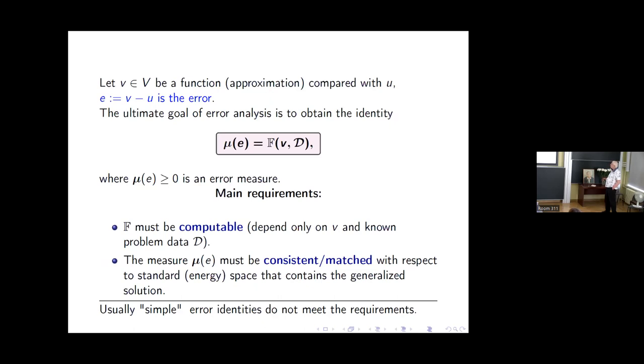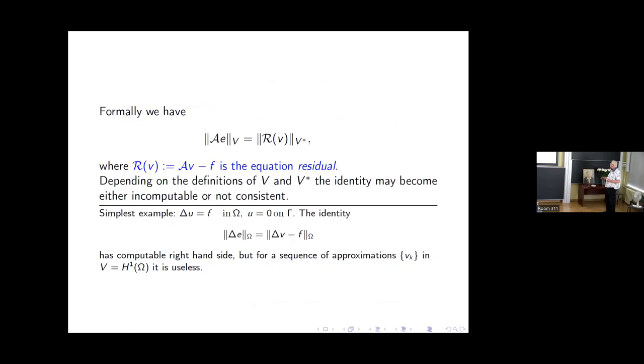Ideally, what we would like to have is the error identity, a posteriori identity. Here we have some measure and some computable quantity which depends only on V and the problem data. To be of practical use, this part should be directly computable. The measure which stands here must be consistent with the space in which our exact solution lies.